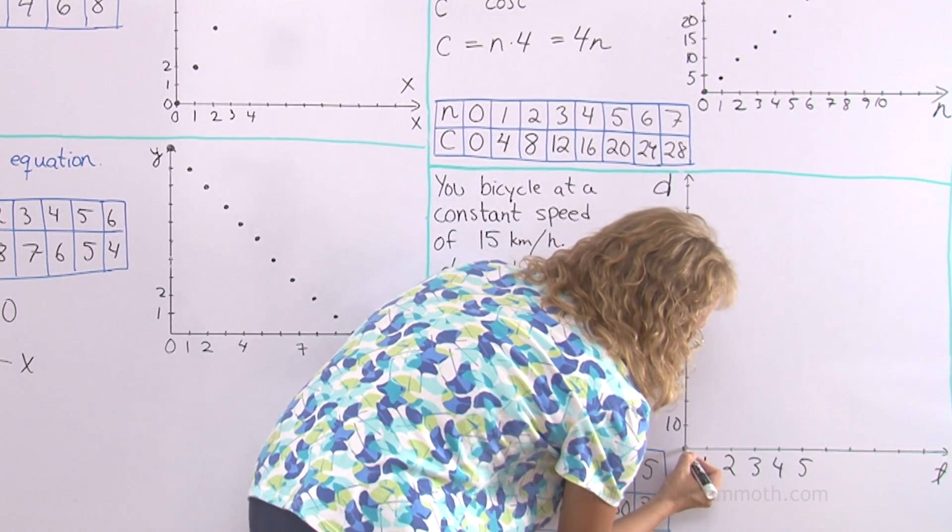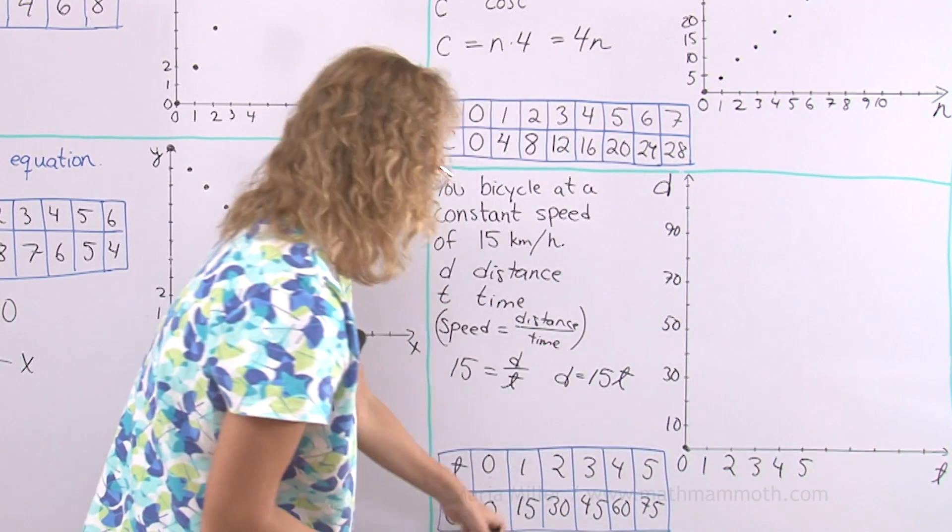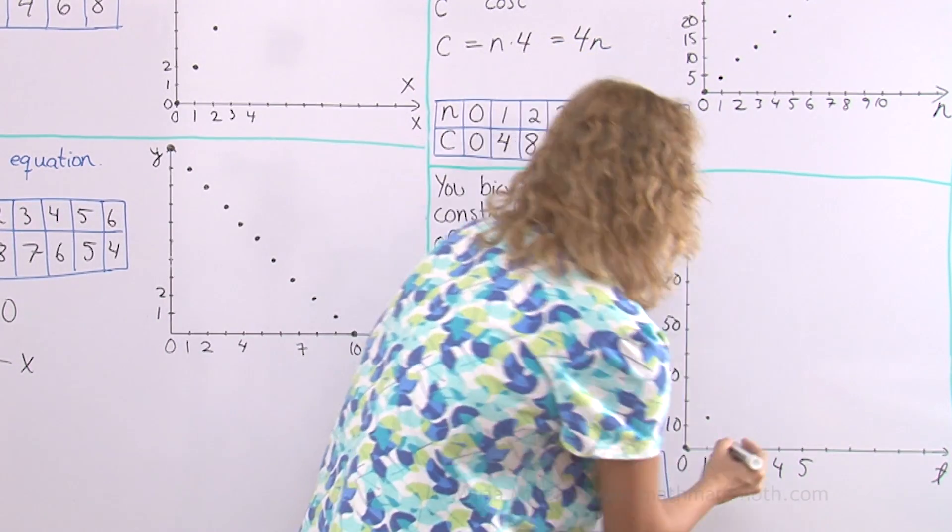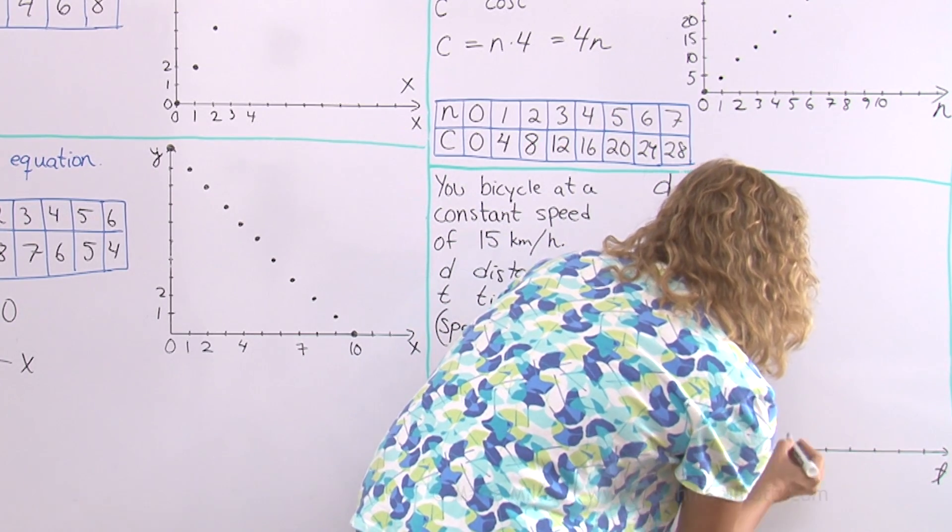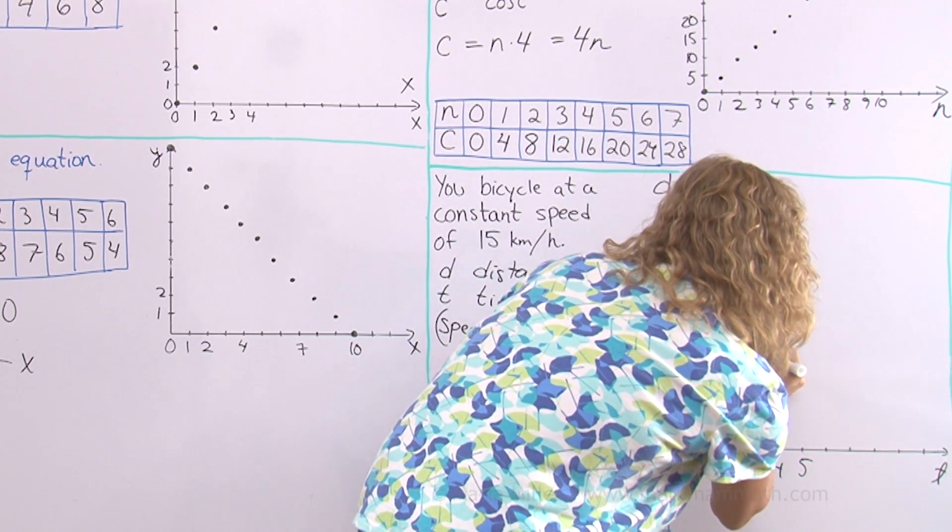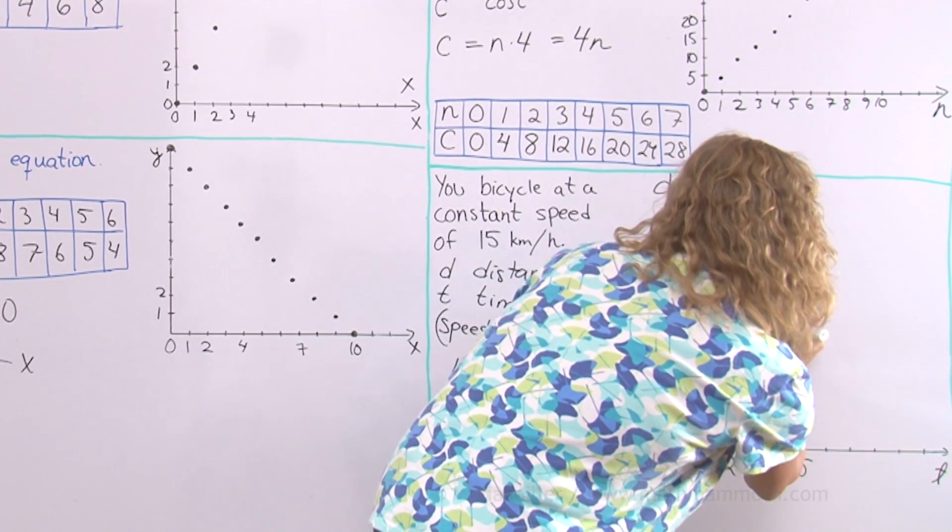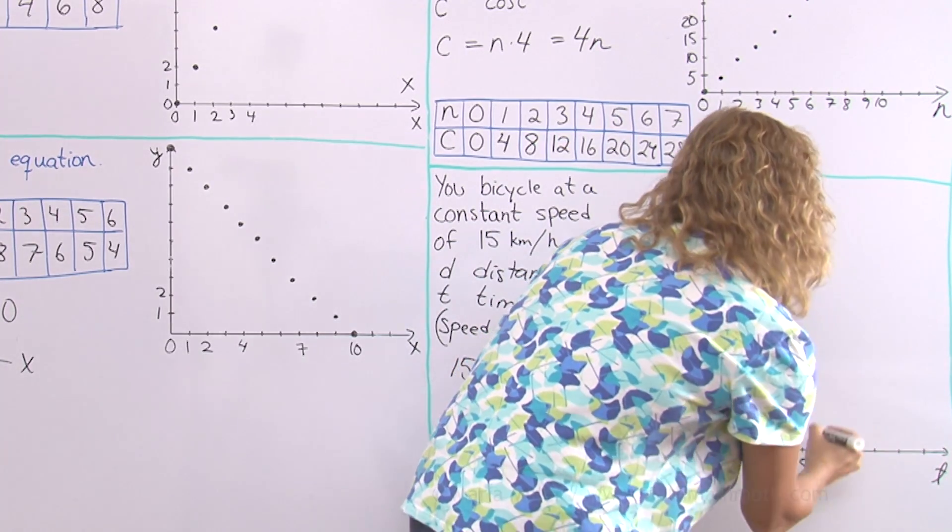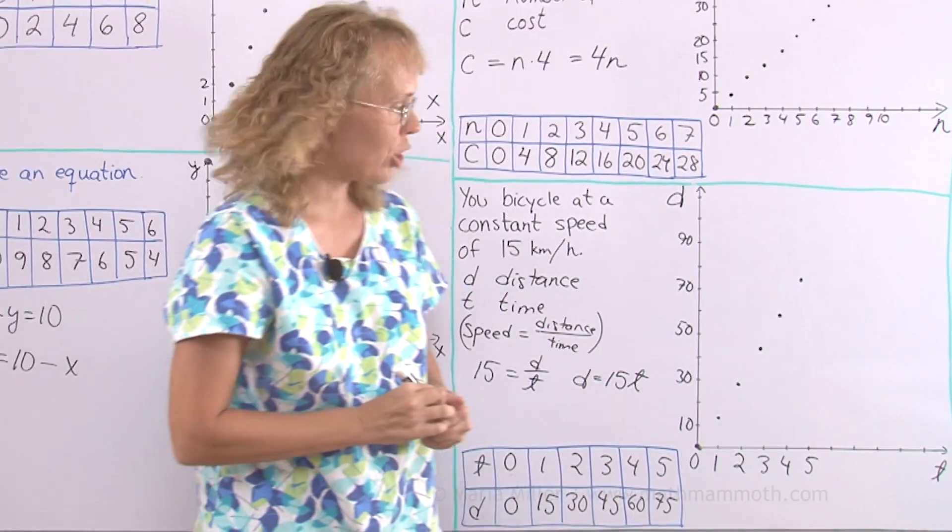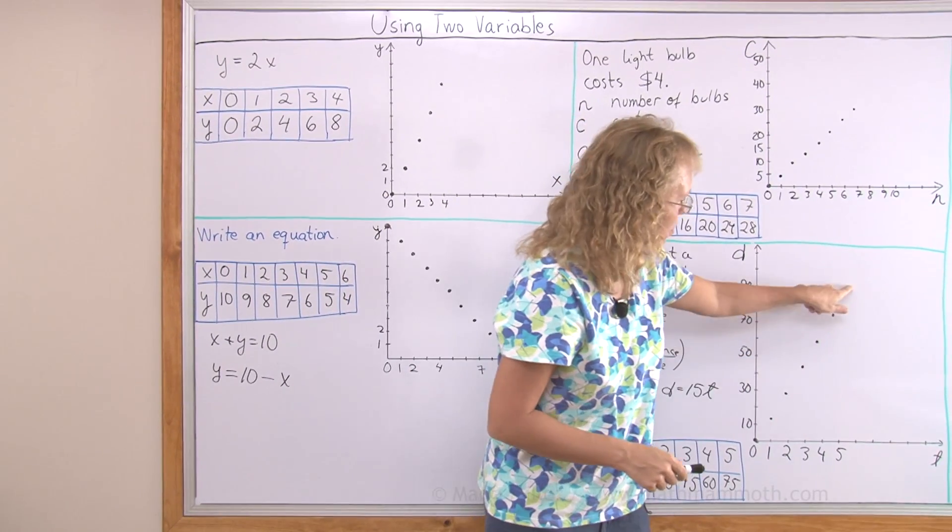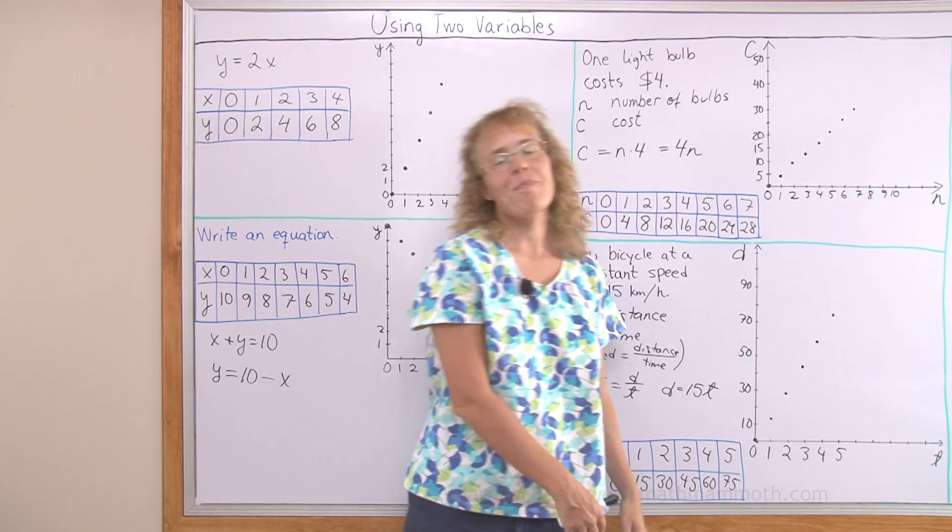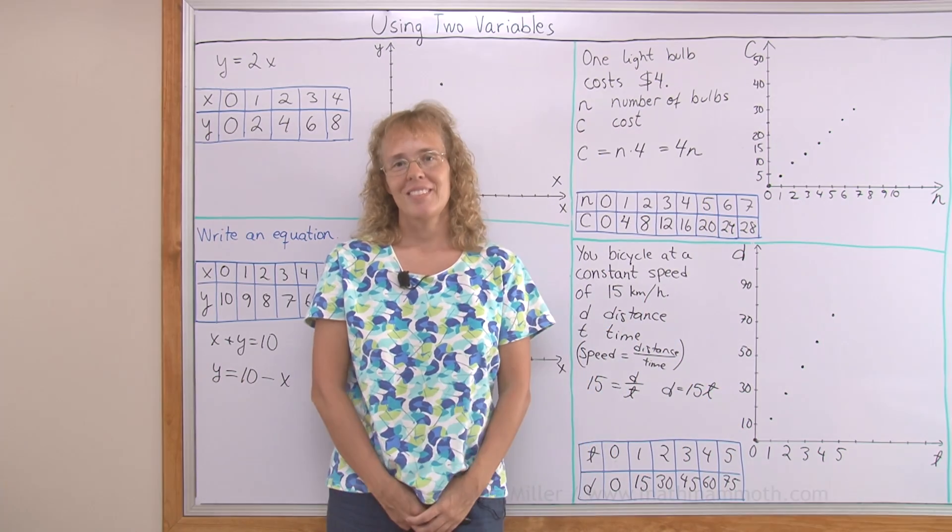Now ready to plot the points. 0, 0 again. 1 hour and 15. Somewhere there. 2 hours and 30. 3 hours and 45. 4 hours would be exactly 60. 5 hours and 75. And on and on it continues. I could continue my points and I could continue this table too. Of course. I hope this was helpful.